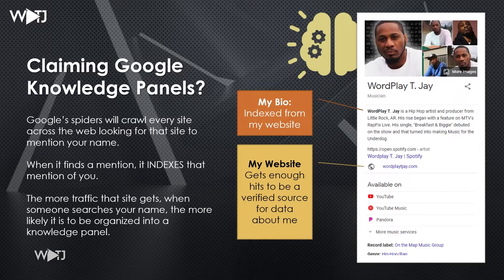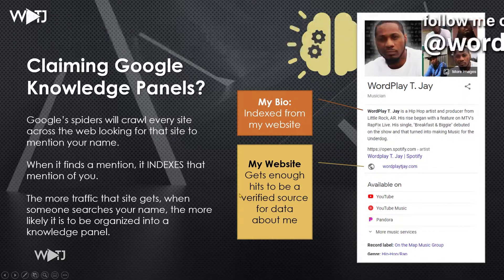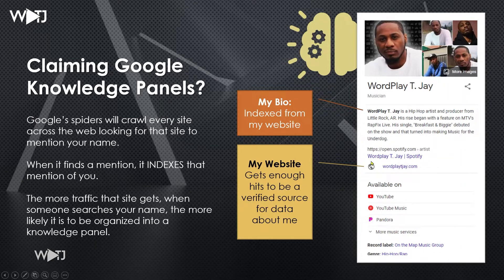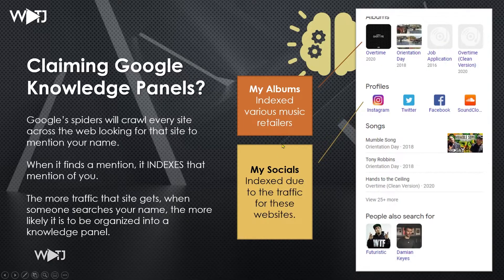As you can see here, my bio is indexed from my website, and my website gets enough hits to be prioritized as the top site for me. The same thing goes for my albums — they're indexed from various music retailers, probably most likely YouTube because Google owns them. My socials are indexed due to traffic from those specific social media websites. Instagram is the top one because that's where I get most of my traffic.